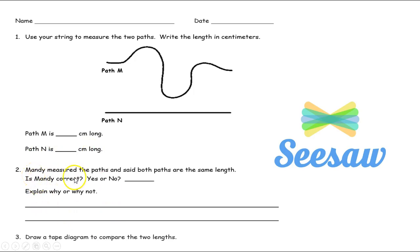Number two says Mandy measured the path and said both paths are the same length. Is Mandy correct? You need to circle yes if she's correct or no if she is not correct. And then you're going to write why she is correct or why she is not correct. After you're done you need to seesaw your teacher. Good luck.